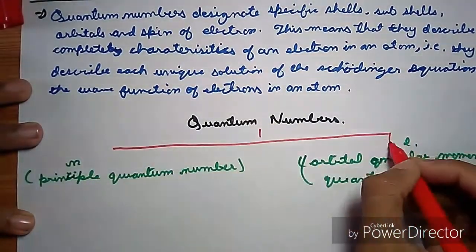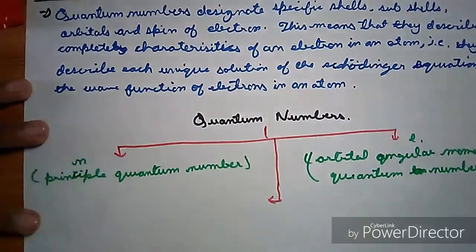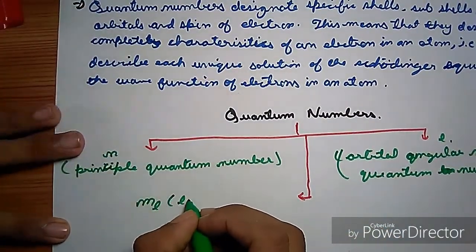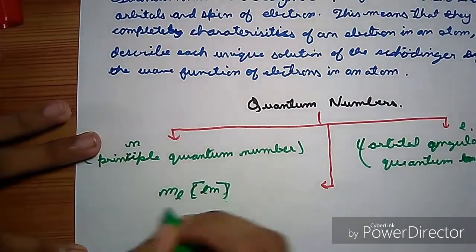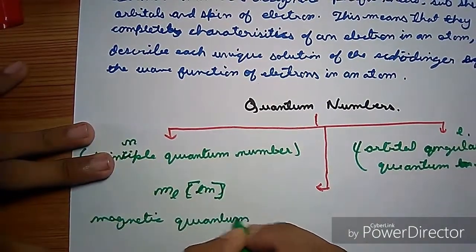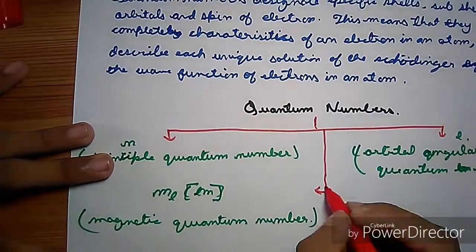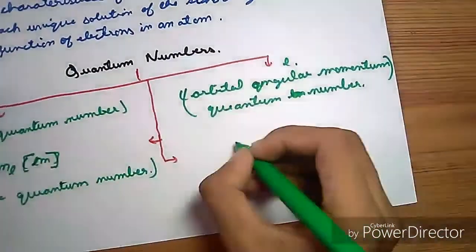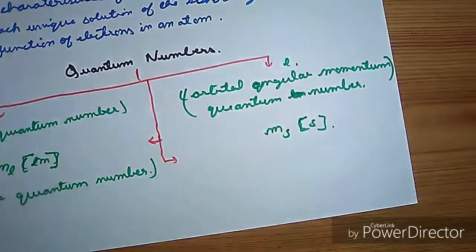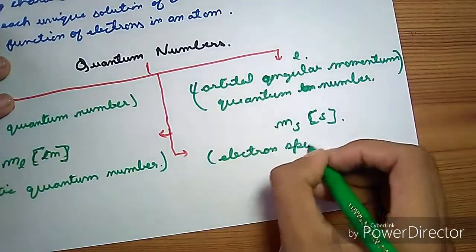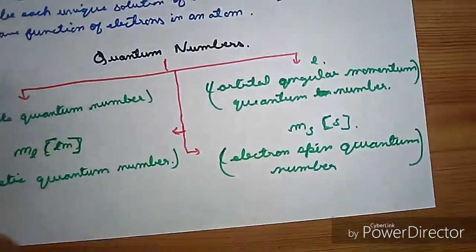We will see all these further in this video. Third one is ML or M, the magnetic quantum number. Fourth one is the electron spin quantum number represented by MS or S.